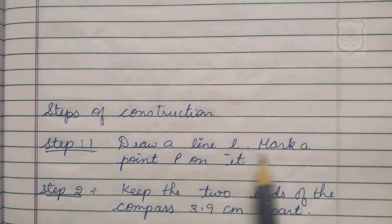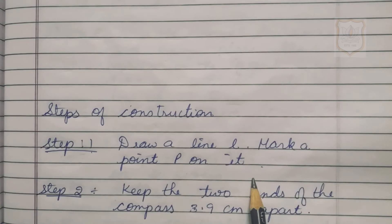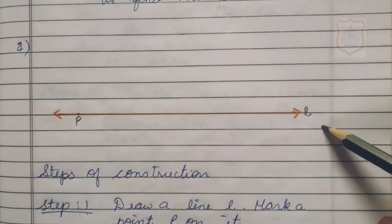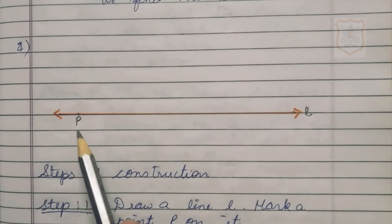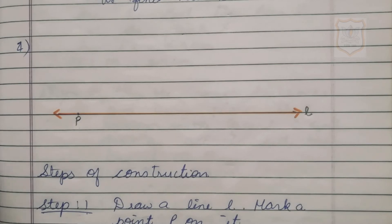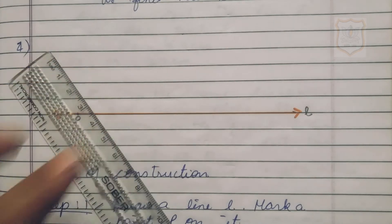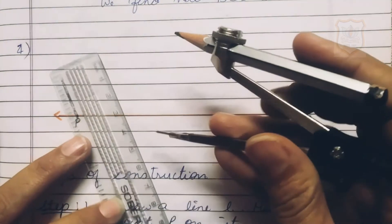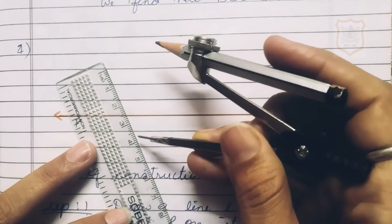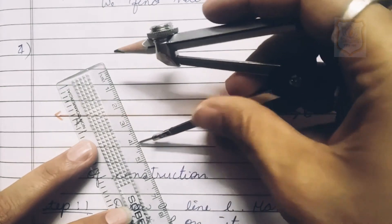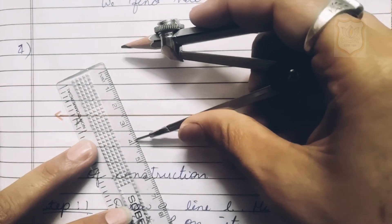Steps of Construction. Step 1: Draw a line L and mark a point P on it. Step 2: Keep the two ends of the compass 3.9 centimeter apart. Place the pointer at 3.9 centimeter and the pencil tip at 0. In this way, open the compass.